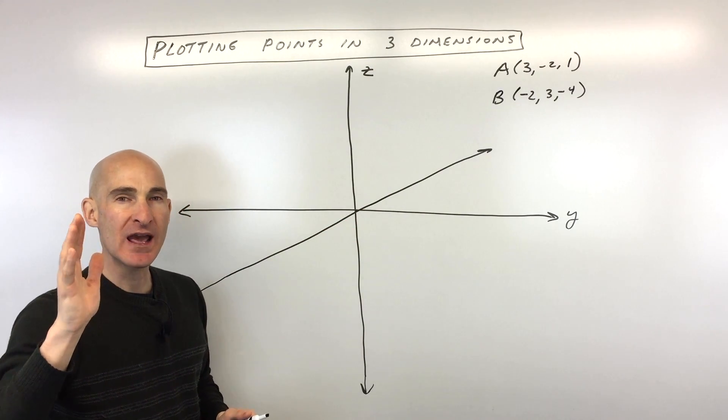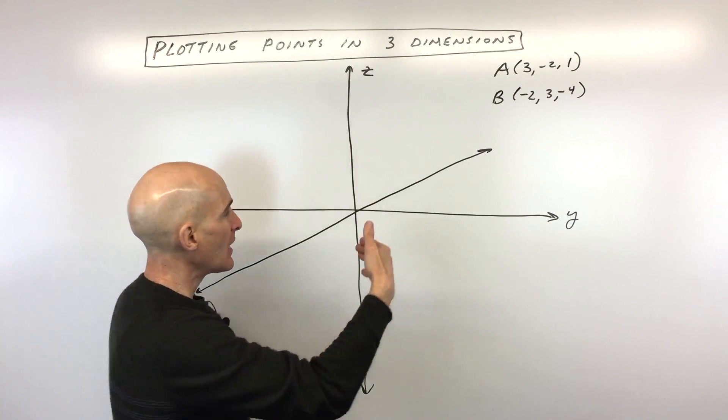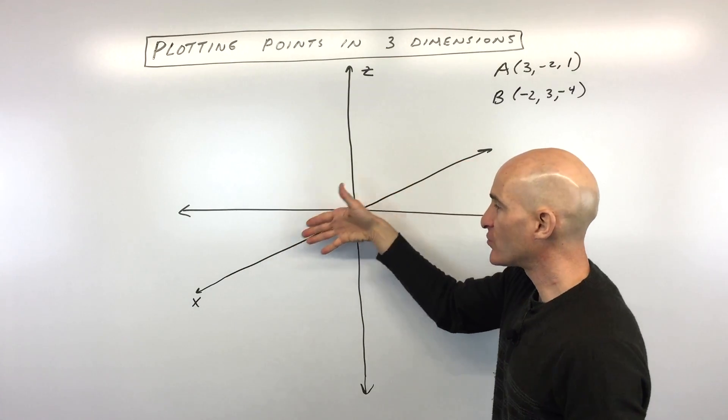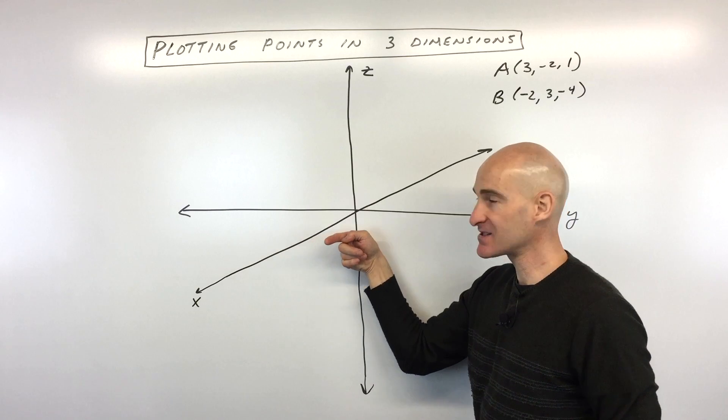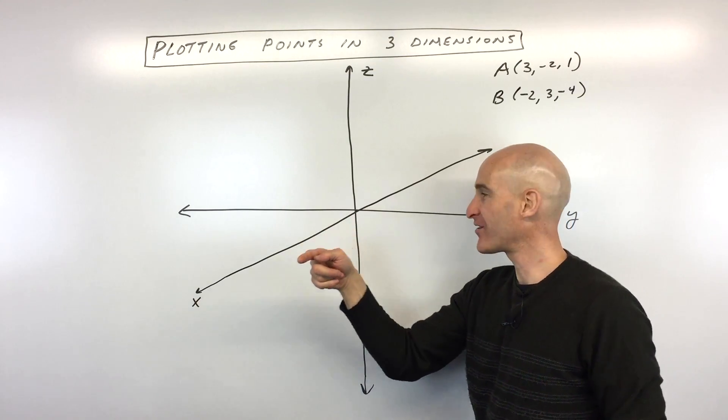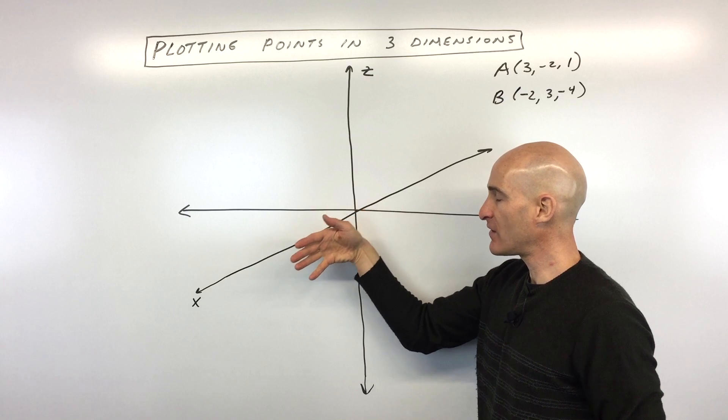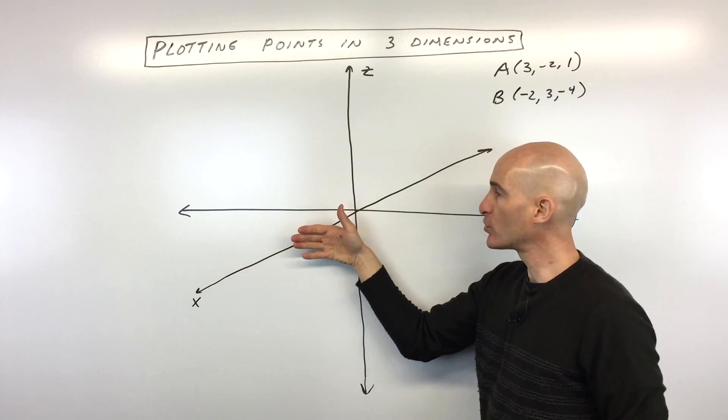One way to think about this is as a right-hand rule. If you take your right hand and put your fingers in the direction of the positive x-axis—this is the axis that's coming out of the board toward us—and you curl them the way they normally would curl,